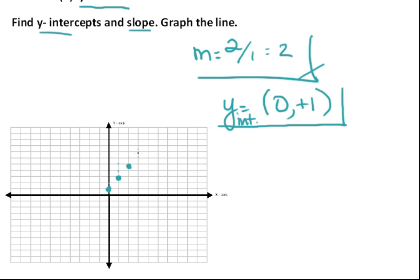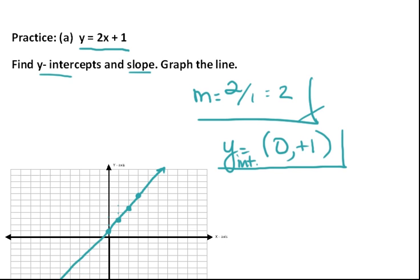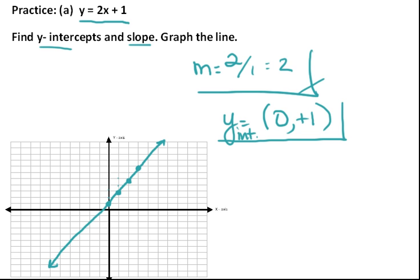Up 2, over 1. Now we have a good number of points to try to draw as straight a line as possible. I don't have a ruler, so I'm eyeballing it. That would be the graphed line that is described by y equals 2x plus 1, along with our slope and y-intercept.